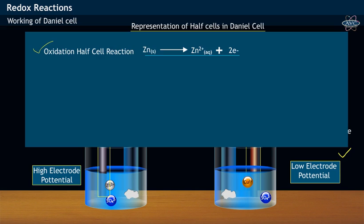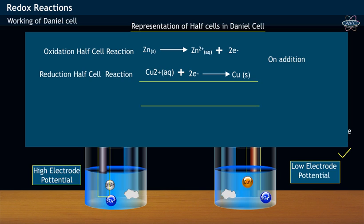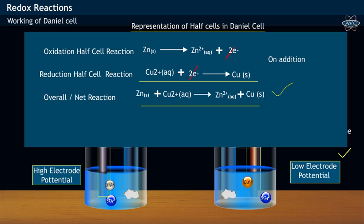Both the oxidation and reduction half cell reactions of Daniell cell may be represented as shown. On adding both the half cell reactions and by canceling common terms, i.e., two electrons lying in the opposite ends of two half cell reactions, we get the net or overall cell reaction for Daniell cell.